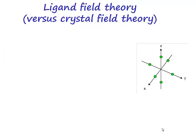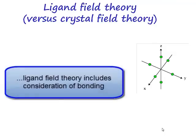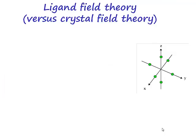Ligand field theory is an extension of that where we go on to consider how the ligands actually bond with the transition metal centre. So we introduce the idea of overlap of orbitals.